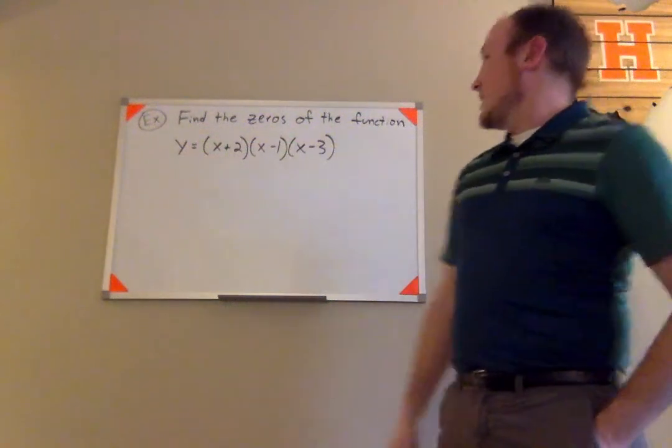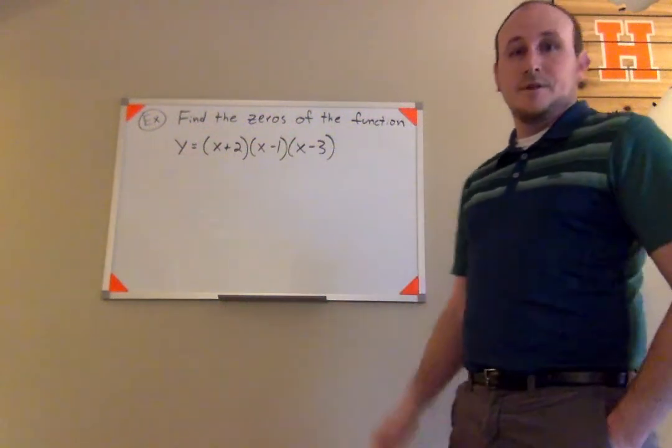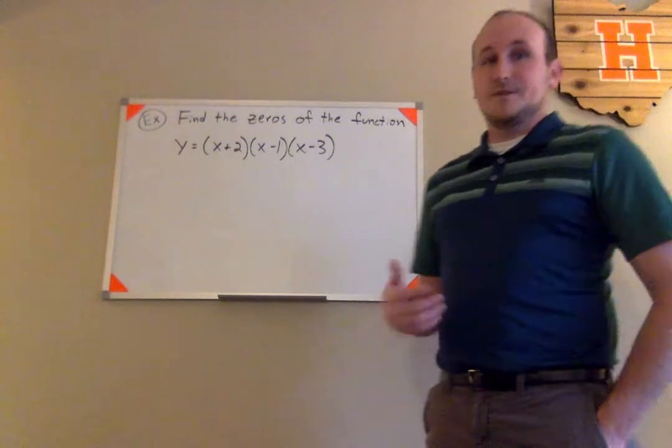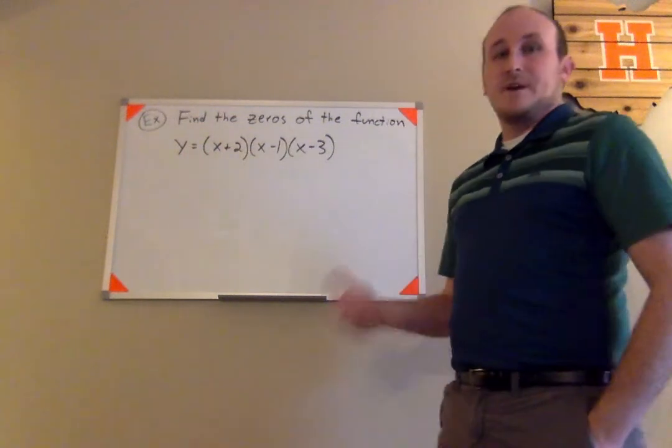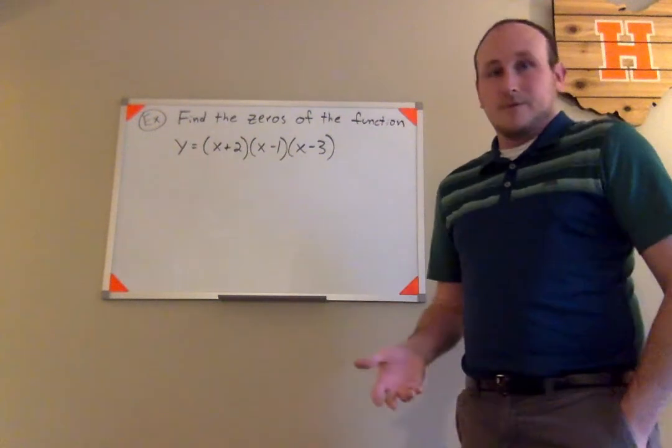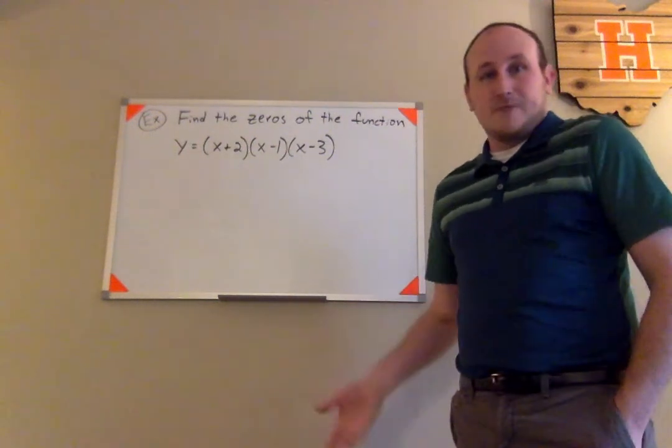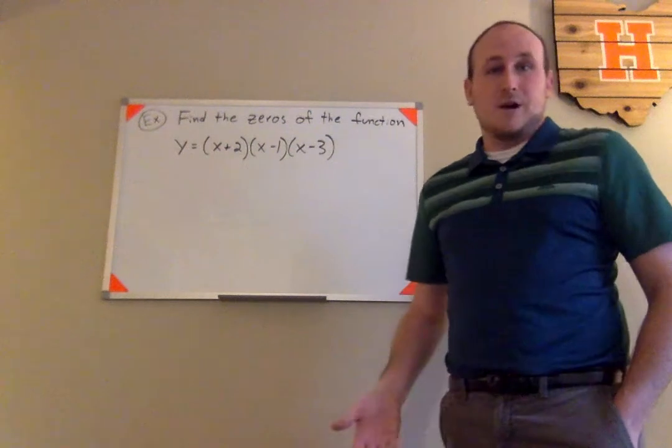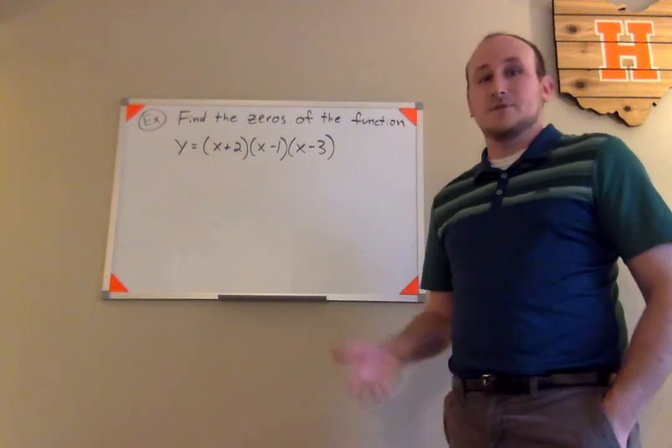Okay, now in this example, we're being asked to find the zeros of the polynomial function. The zeros are the values of x that will make this function evaluate to zero. In other words, we plug in this number for x and we get zero for y. That's what we mean when we're talking about the zeros of the function.